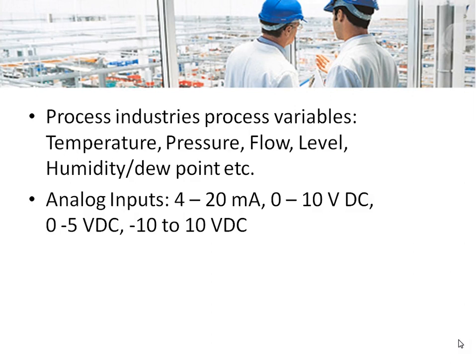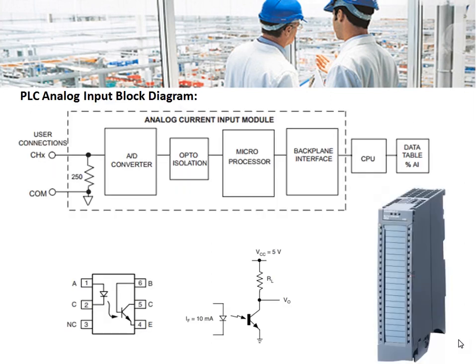At the control room, before feeding this analog signal to the CPU of the PLC, it should be converted to a digital signal. The block diagram of a typical analog current input module is shown in the figure. The current coming from the transmitter is converted to a voltage by using a 250 ohm resistor.